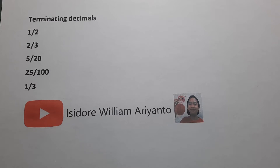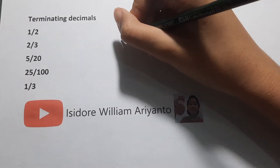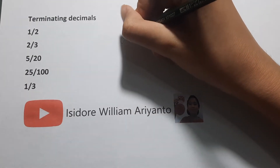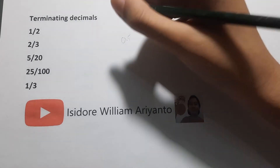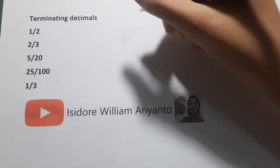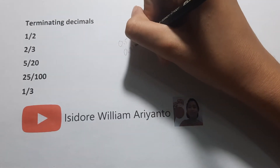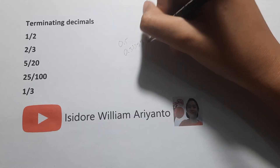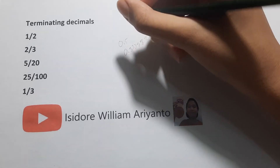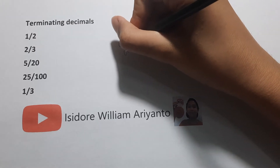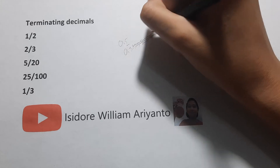What terminating decimals means is a decimal that stops — for example, 0.5. A decimal that does not stop, or a recurring decimal, can be 0.333333333. If you want to show recurring decimals, you can just write a bar on top.